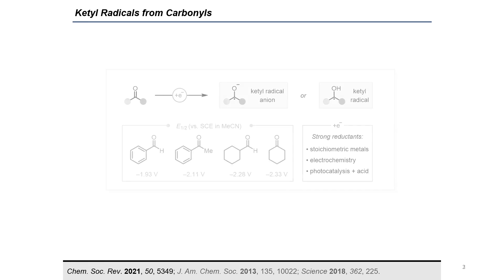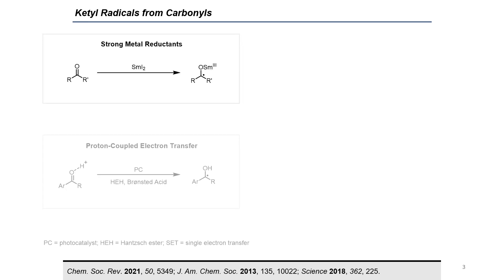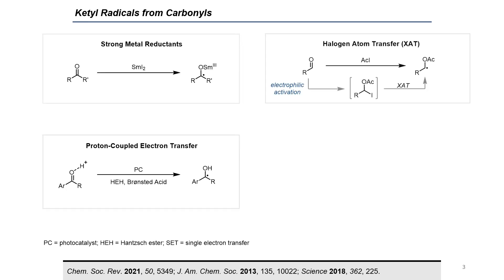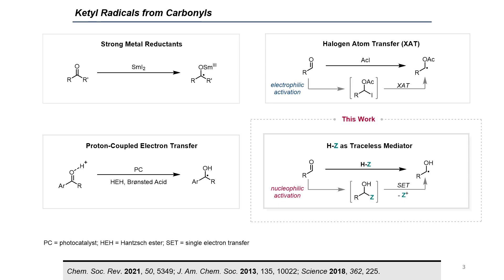One of the classic ways to ketyl generation from carbonyls is by use of strong metal reductants such as SmI₂, facilitated by its high oxophilicity. More recently, Nicewicz and co-workers reported photoredox-catalyzed ketyl generation enabled by a photocoupled hydrogen atom transfer approach, wherein the reduction potentials of carbonyls are increased via hydrogen bond interactions.